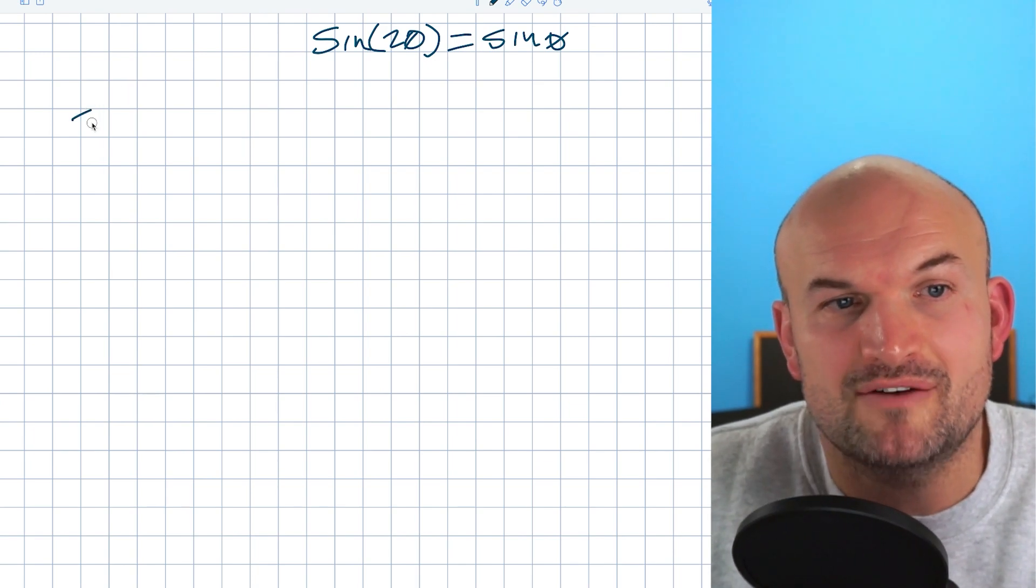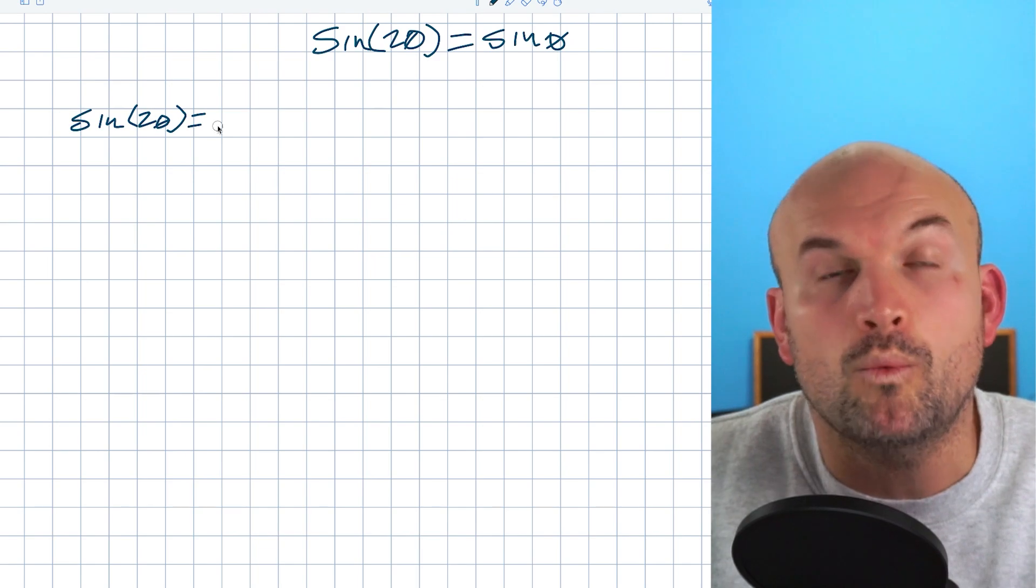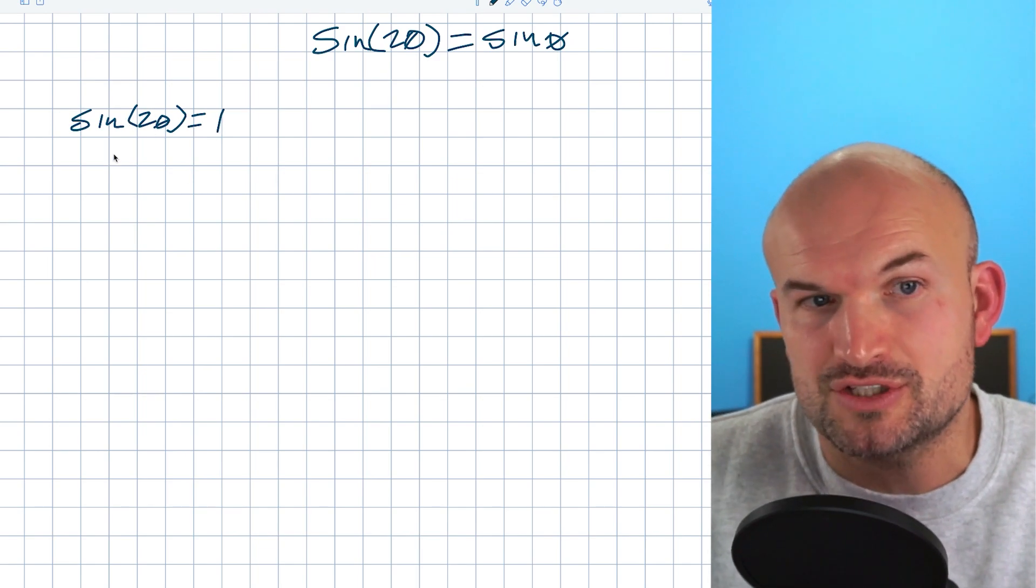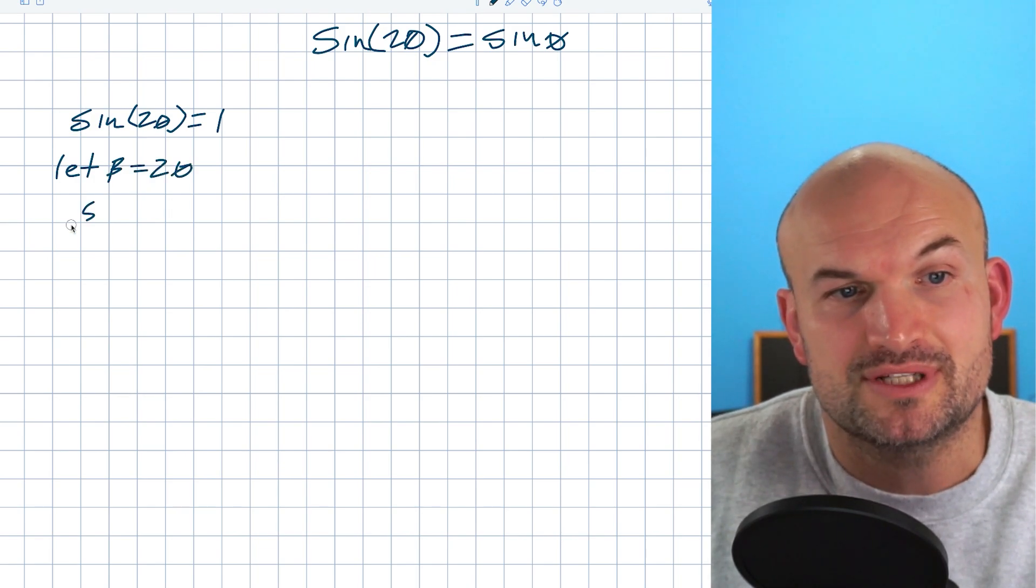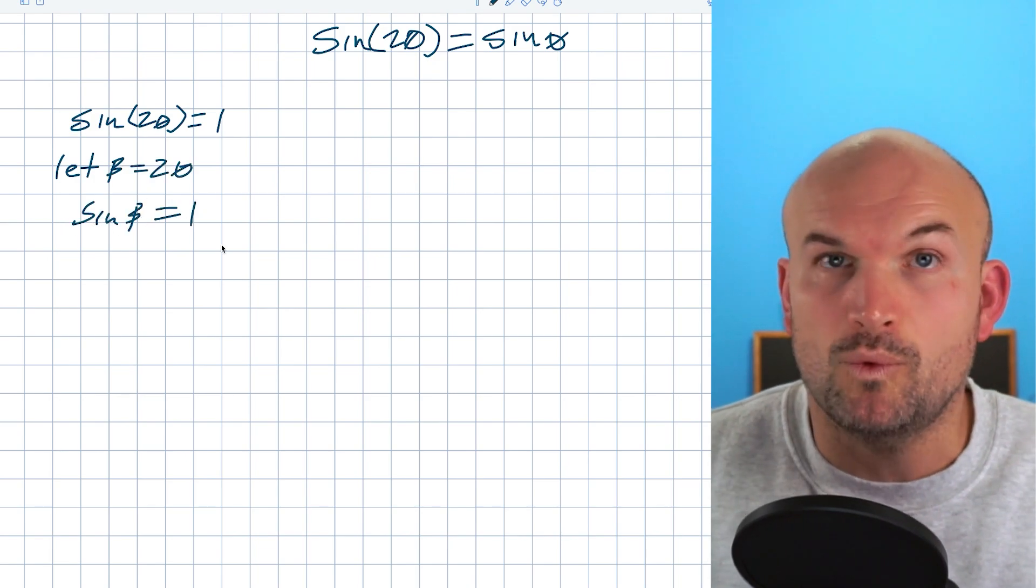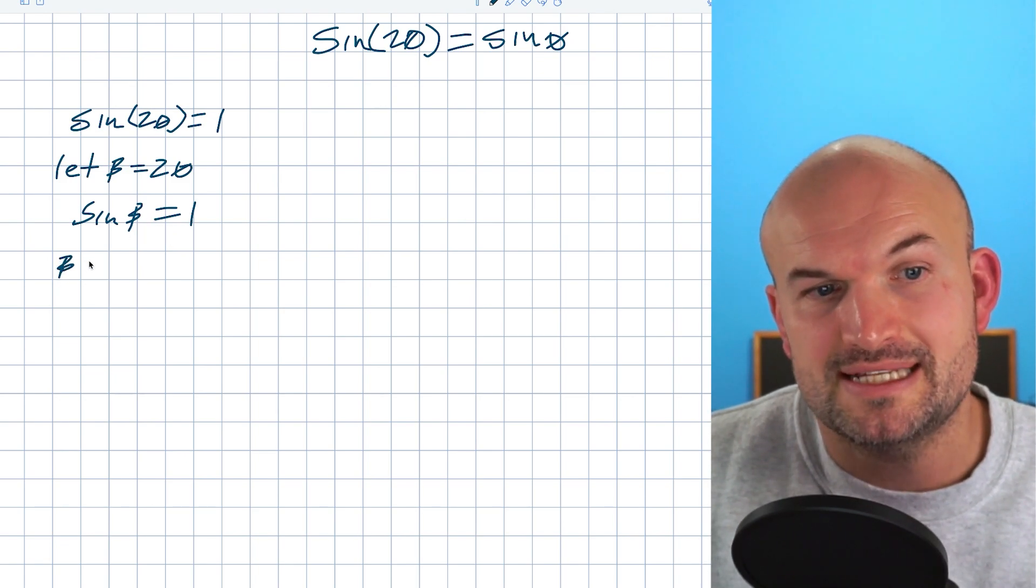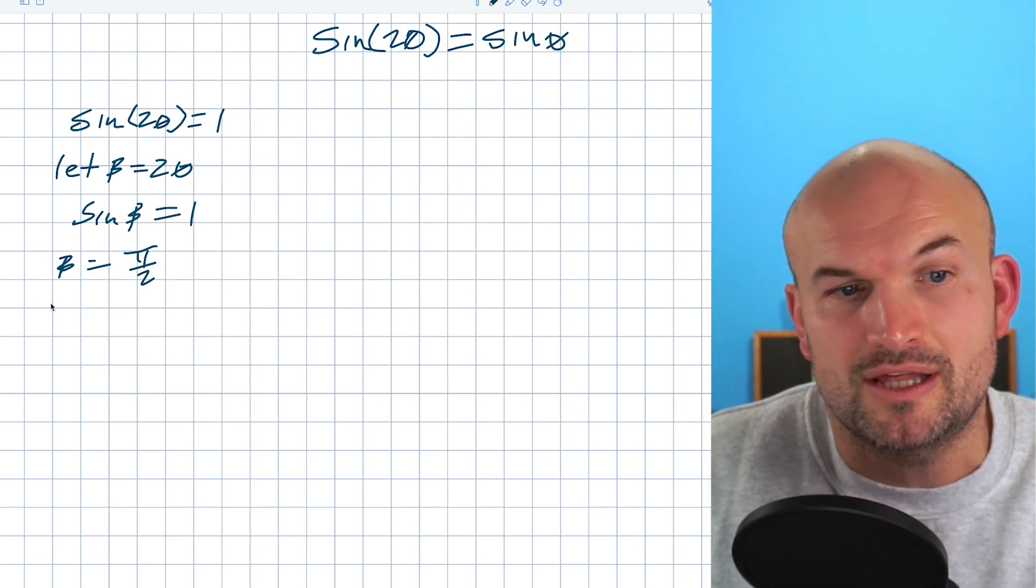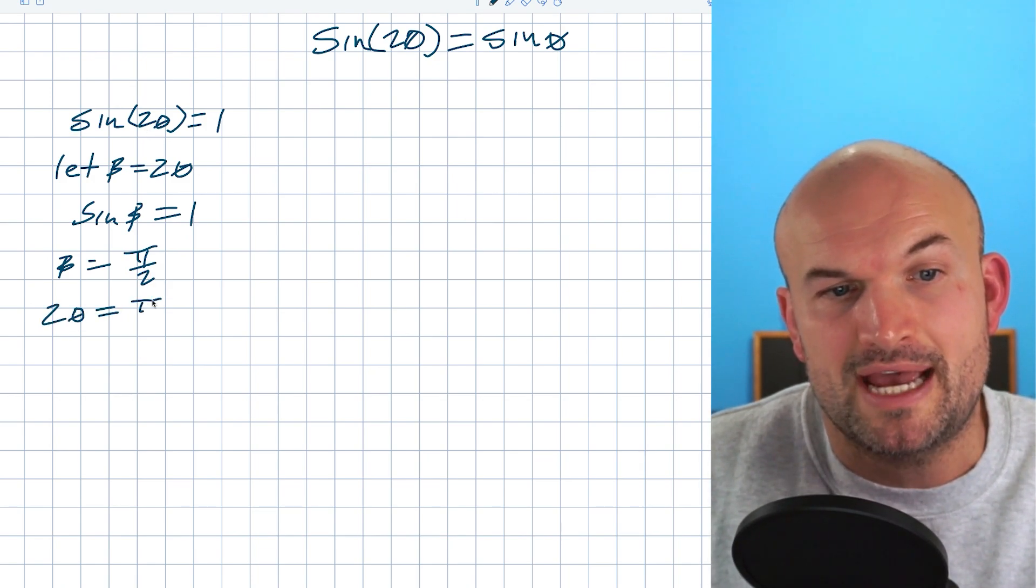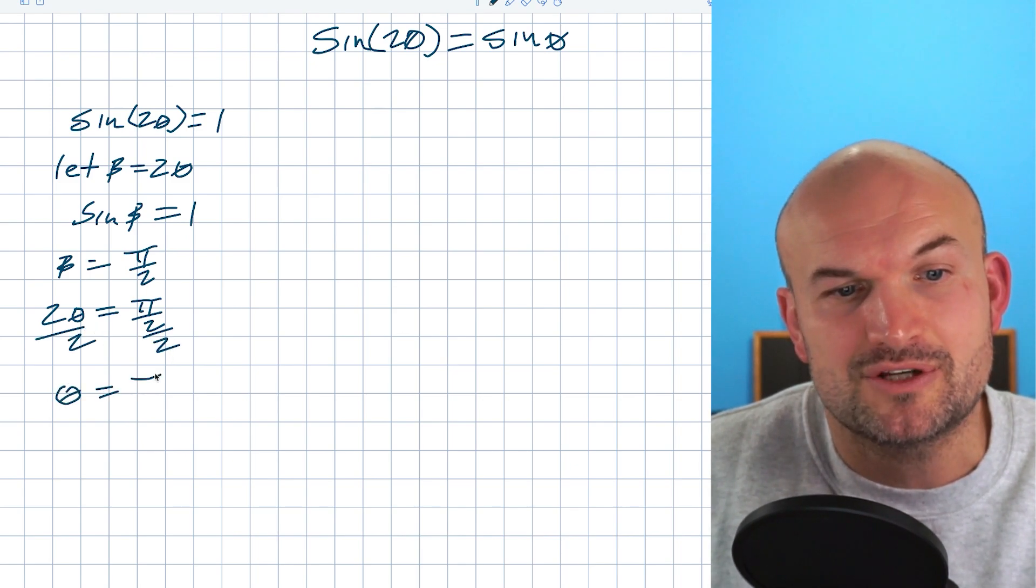So just a quick sidebar, if I had sin(2θ) = 1, I can go ahead and solve this. What I'll do is use substitution. I'll say let β = 2θ. And then we'll say sine of β equals one. Then we'll use the unit circle and say when does this work? We say β = π/2. Then what we do is include back this double angle and say 2θ = π/2. And then we divide by two and say θ = π/4.